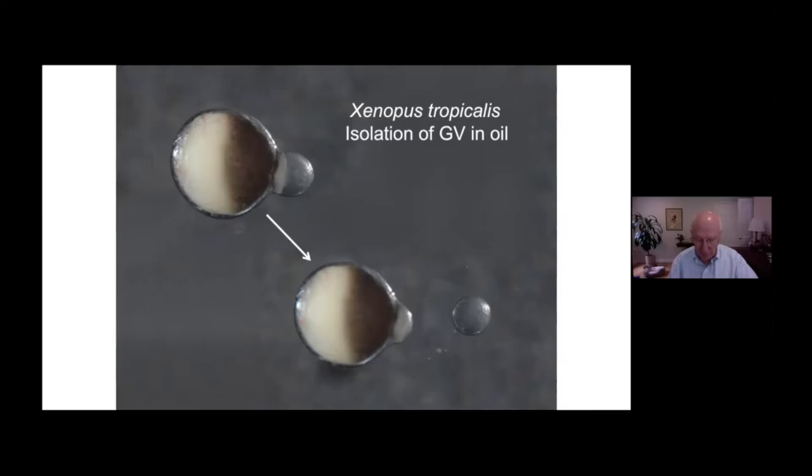This nucleus is almost always called the germinal vesicle, or GV, a term that actually goes all the way back to the early 19th century. It was first described from oocytes of the chicken long before it was recognized as the nucleus, and even before the oocyte itself was recognized as a single giant cell.